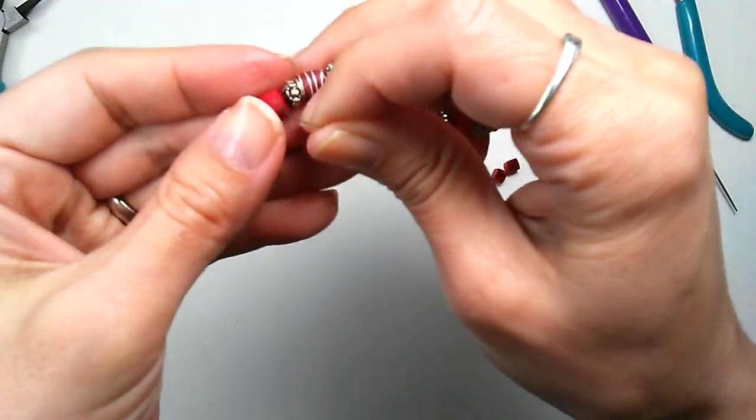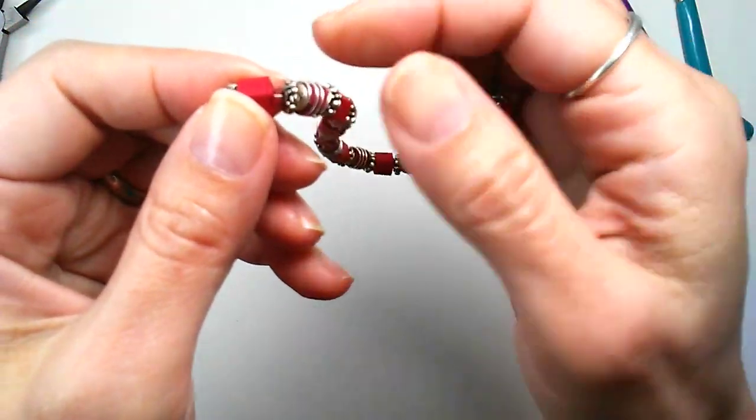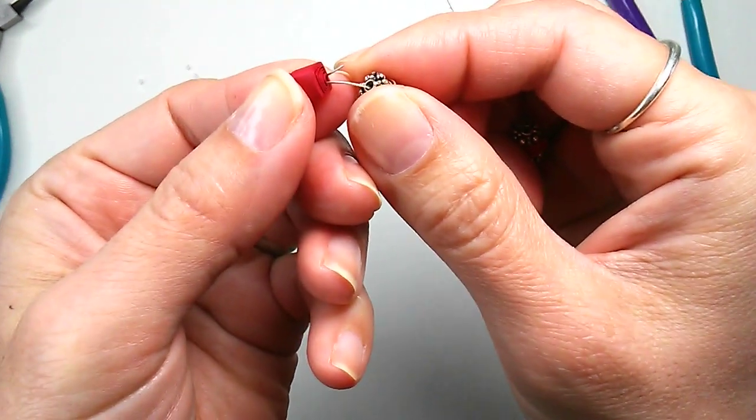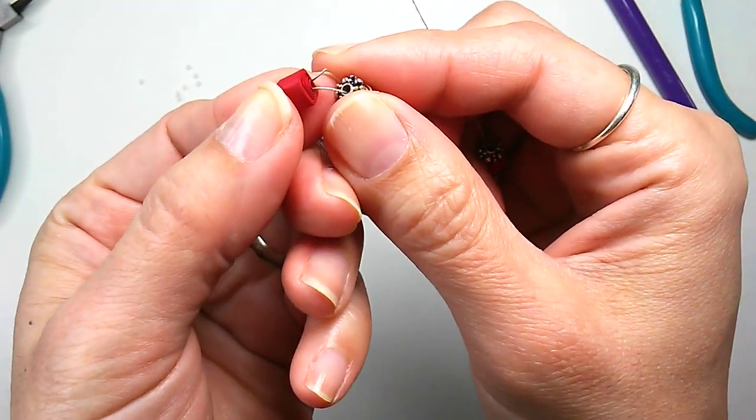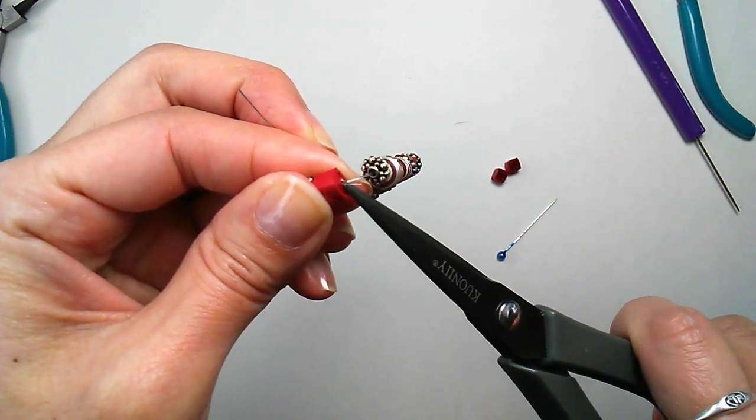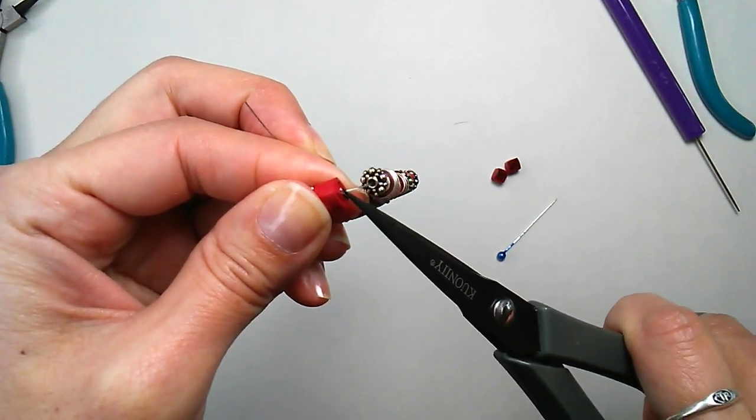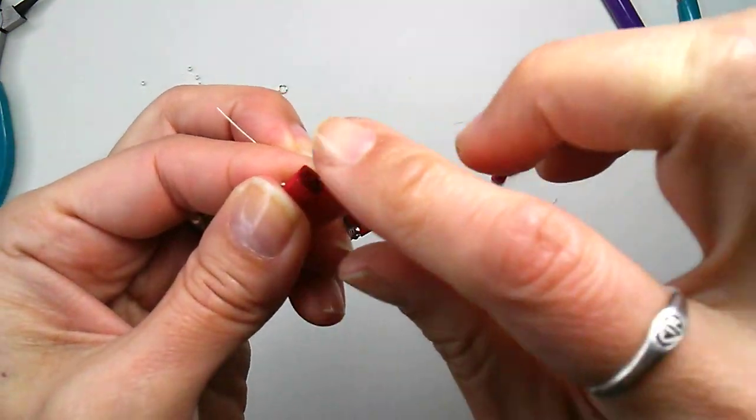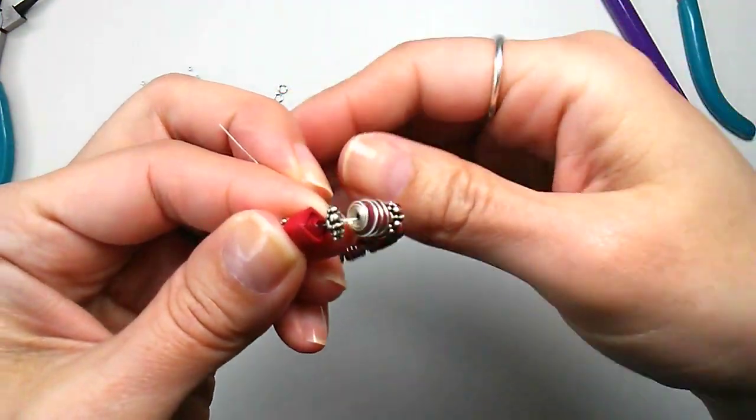Now before I forget, I need to trim the extra wire at the beginning. I'll keep some wire going through into a couple beads and then cut any of the extra as close to the bead as possible. And now it's hidden and there's no pokey parts sticking out.